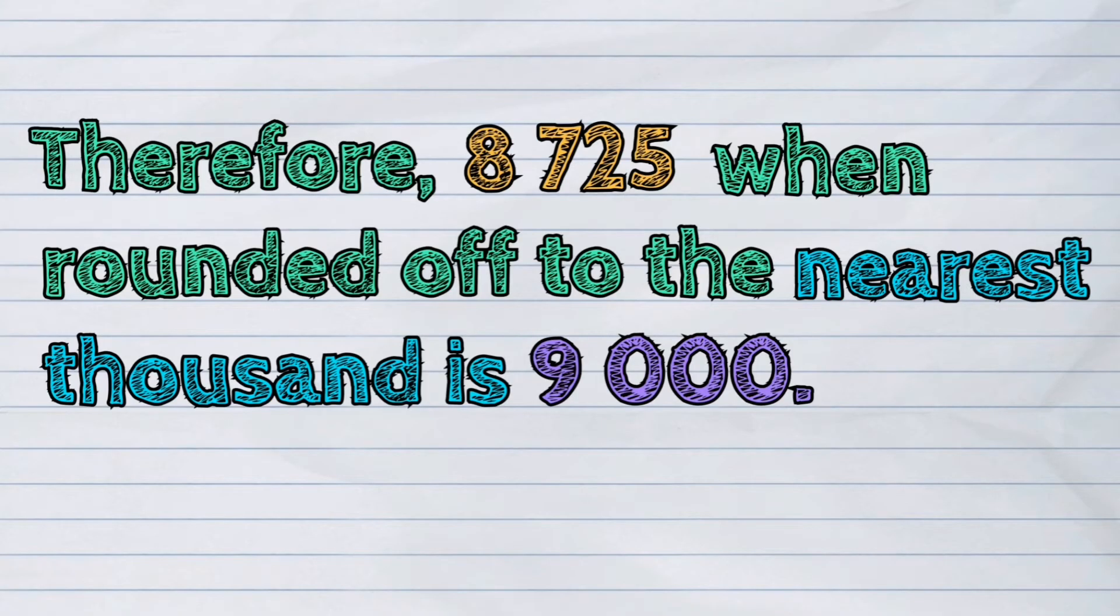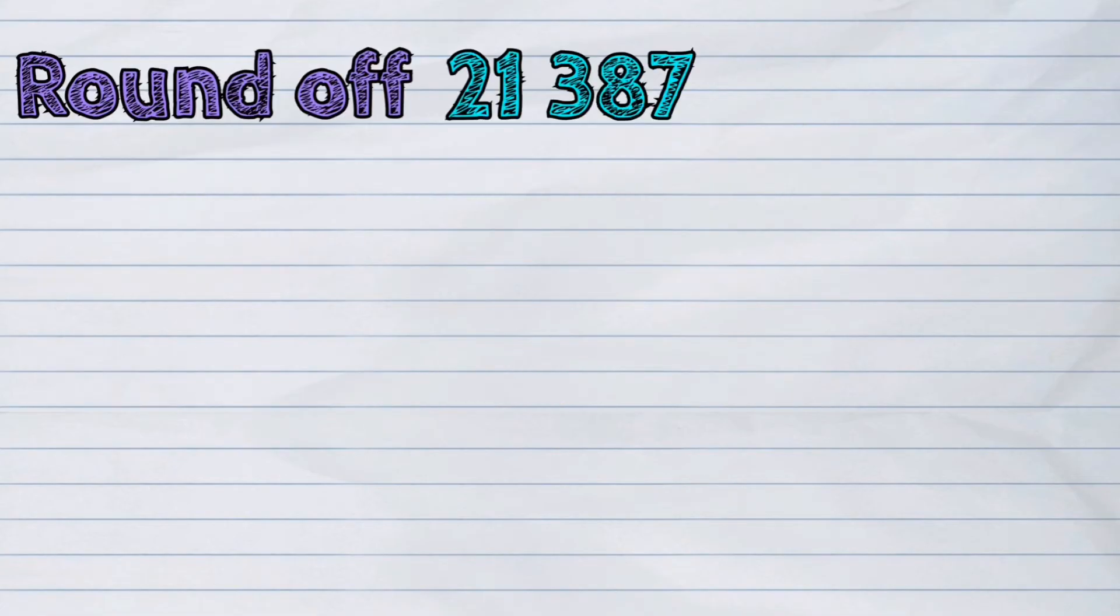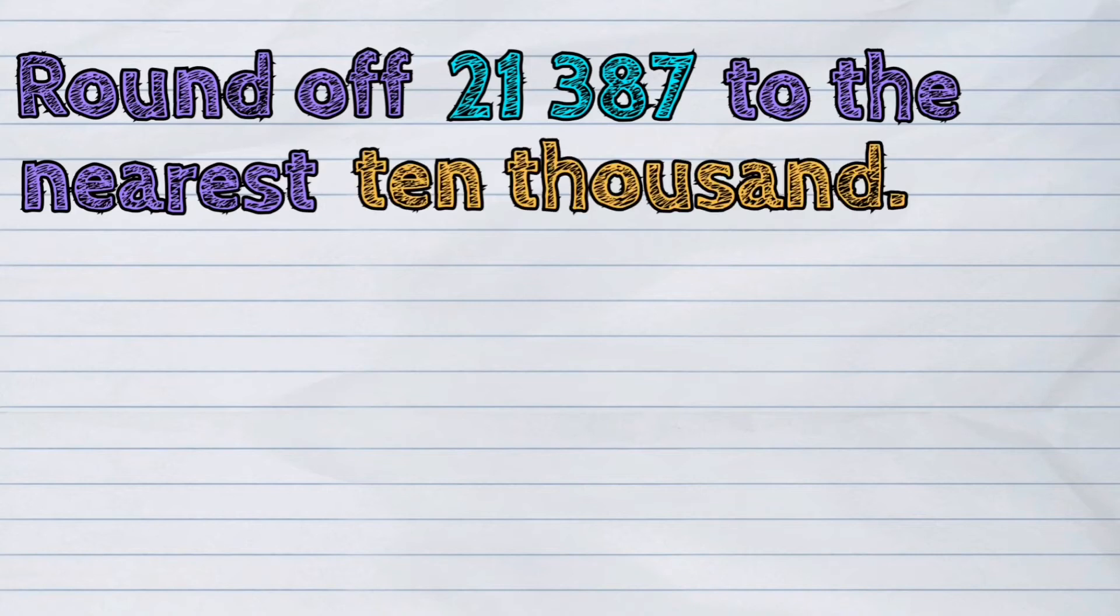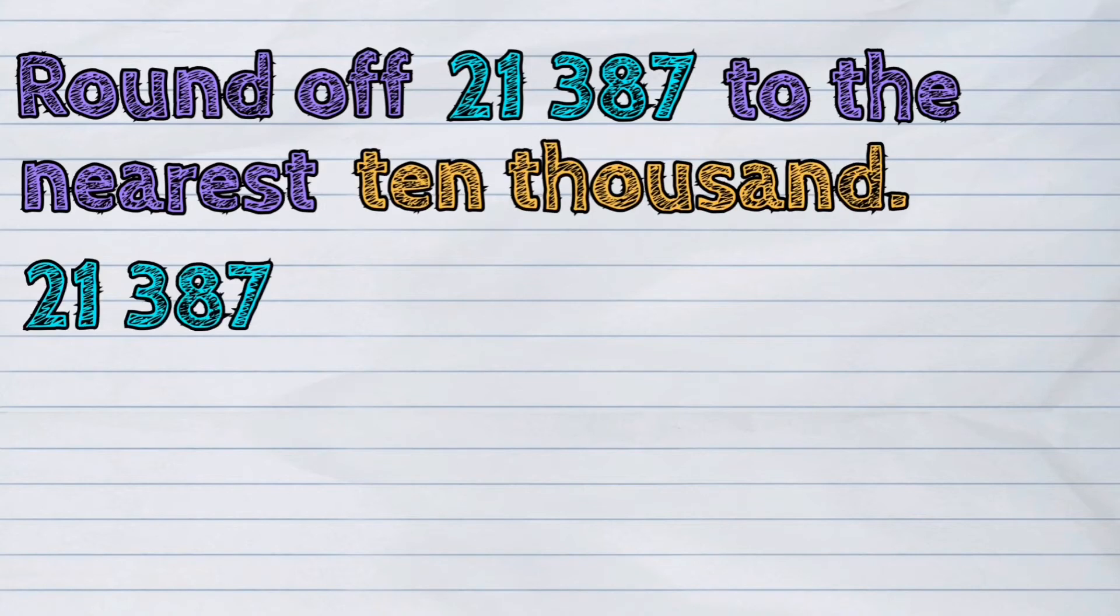Another example. We will round off 21,387 to the nearest ten thousand. So again, we will encircle the digit in the ten thousands place. It's digit 2.